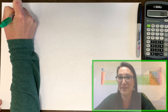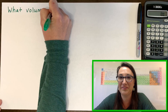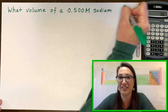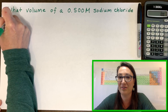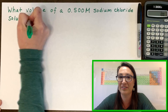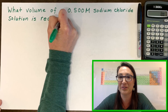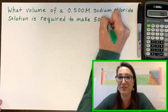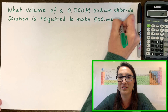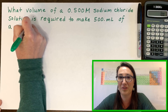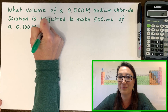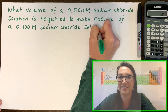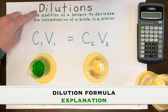What volume of a 0.500 molar sodium chloride solution is required to make 500 milliliters of a 0.100 molar sodium chloride solution? First, we have to learn how to use the dilution calculation formula, and next, how to make the solution using lab equipment.